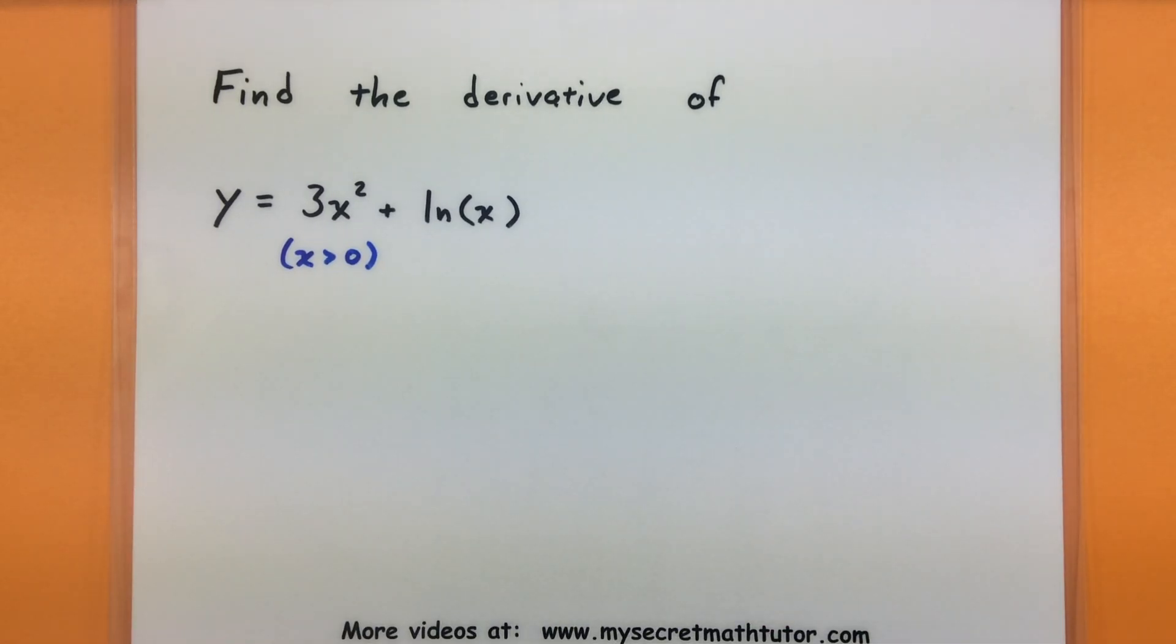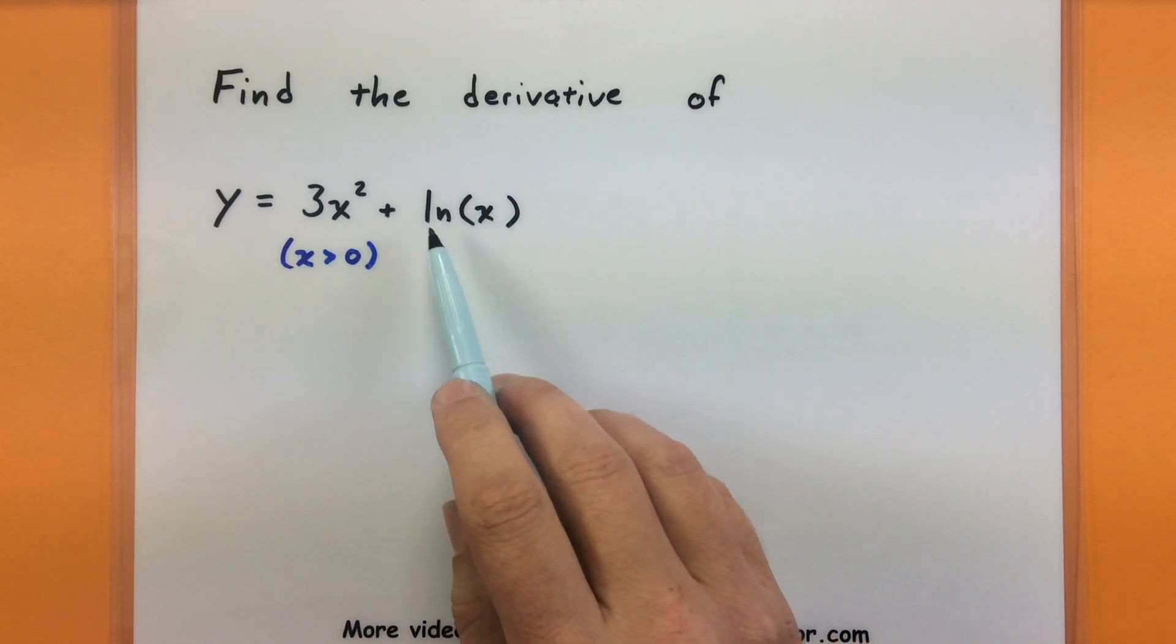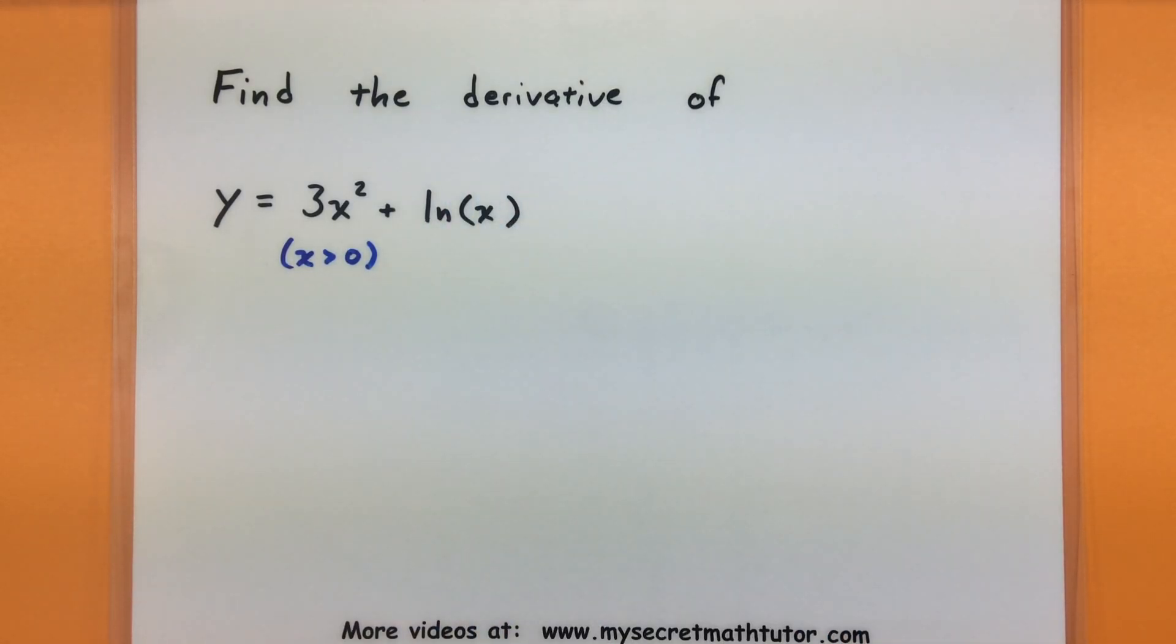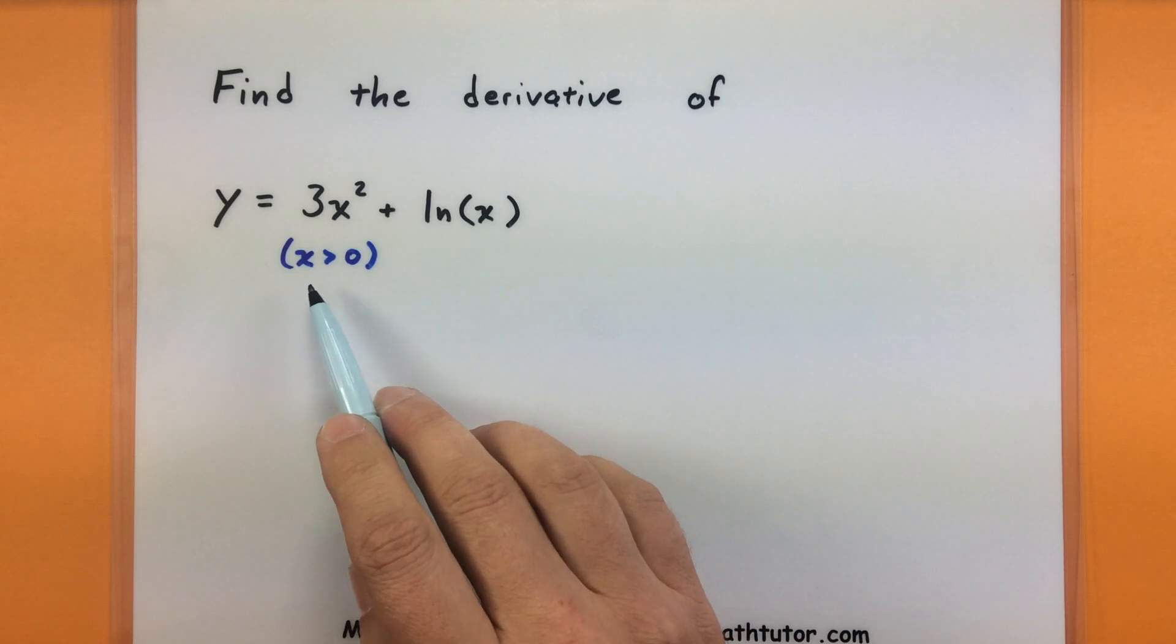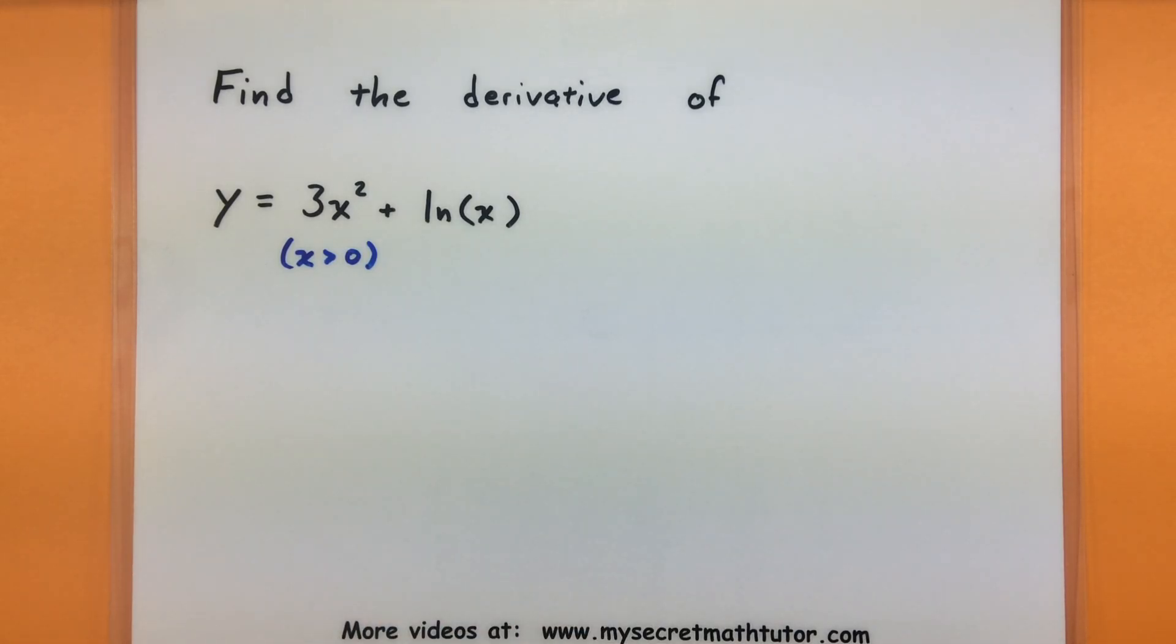For the first one we're going to deal with y equals 3x squared plus the natural log of x. And you'll notice in this case I've left out any absolute values, so I'm implying that we're only dealing with positive x's, not any negatives running around, just positive x's.